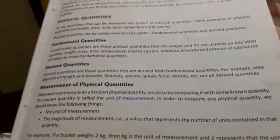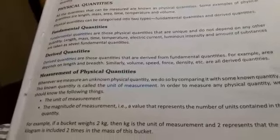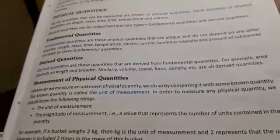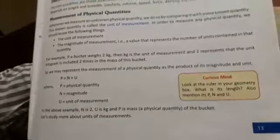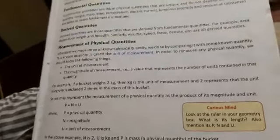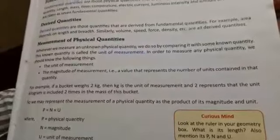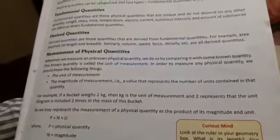For example, if a bucket weighs 2 kilograms, then 2 kilogram is the unit of measurement, and 2 represents that the unit kilogram is included two times in the mass of this bucket. So we may represent the measurement of a physical quantity as the product of its magnitude and unit.